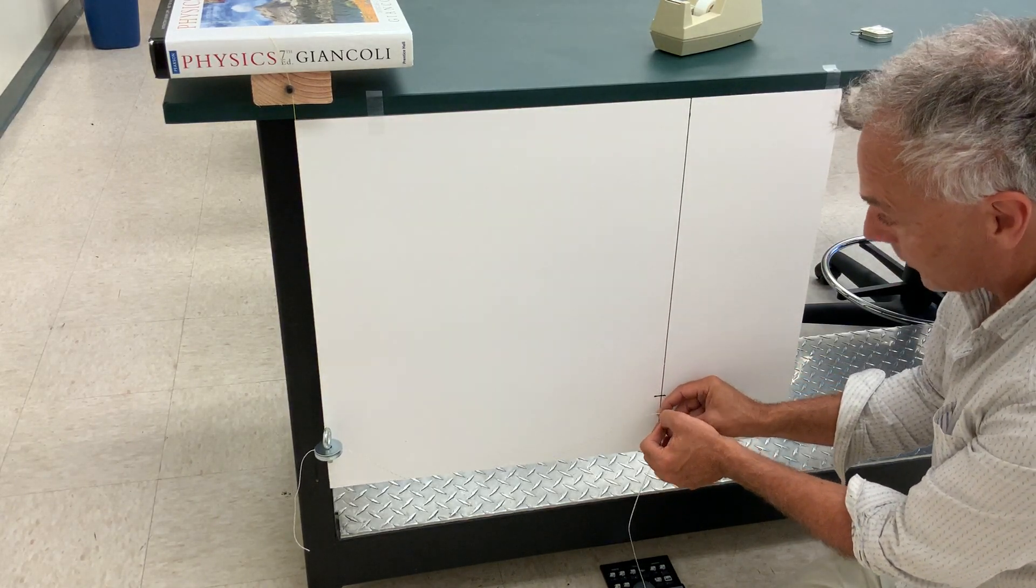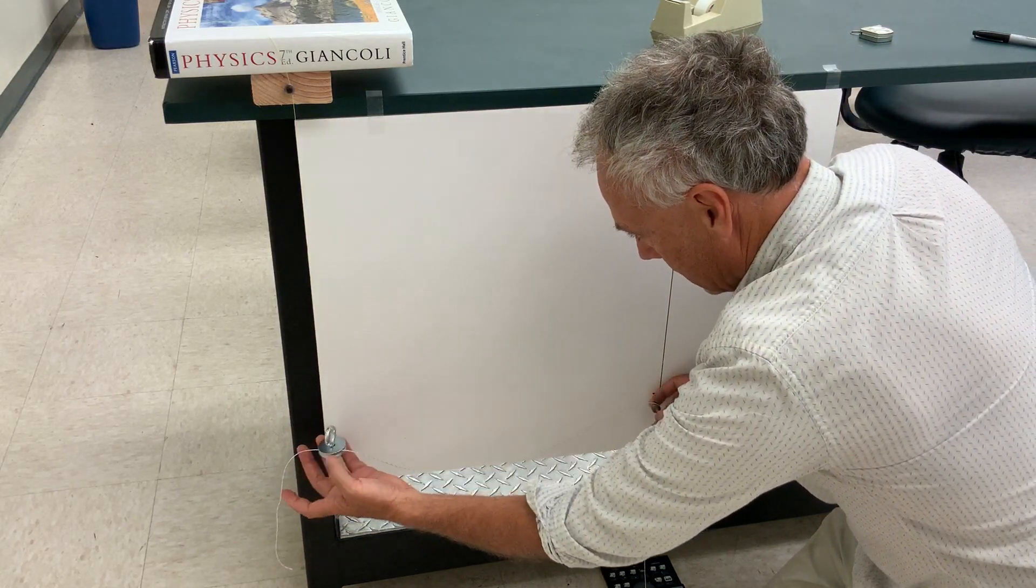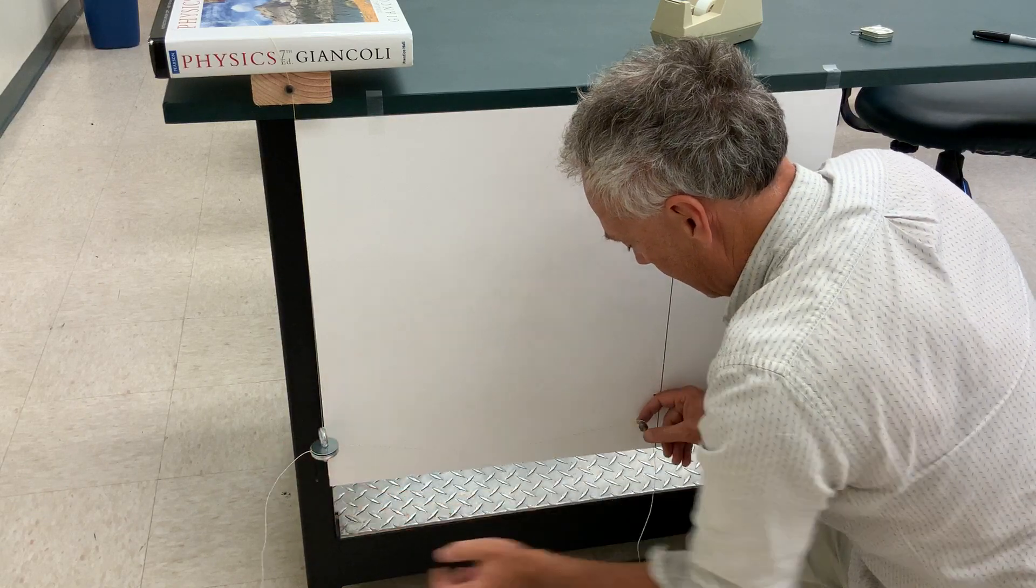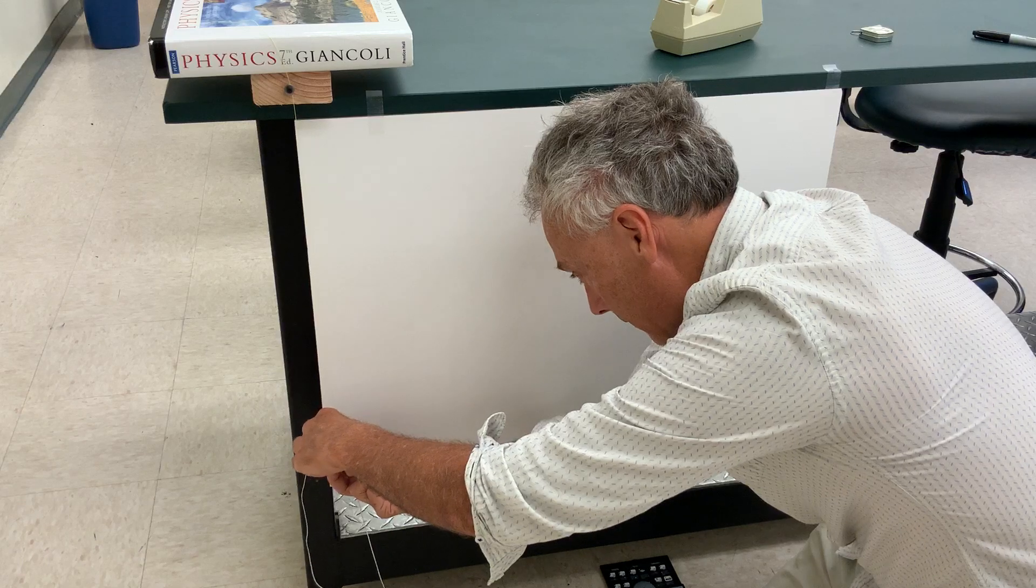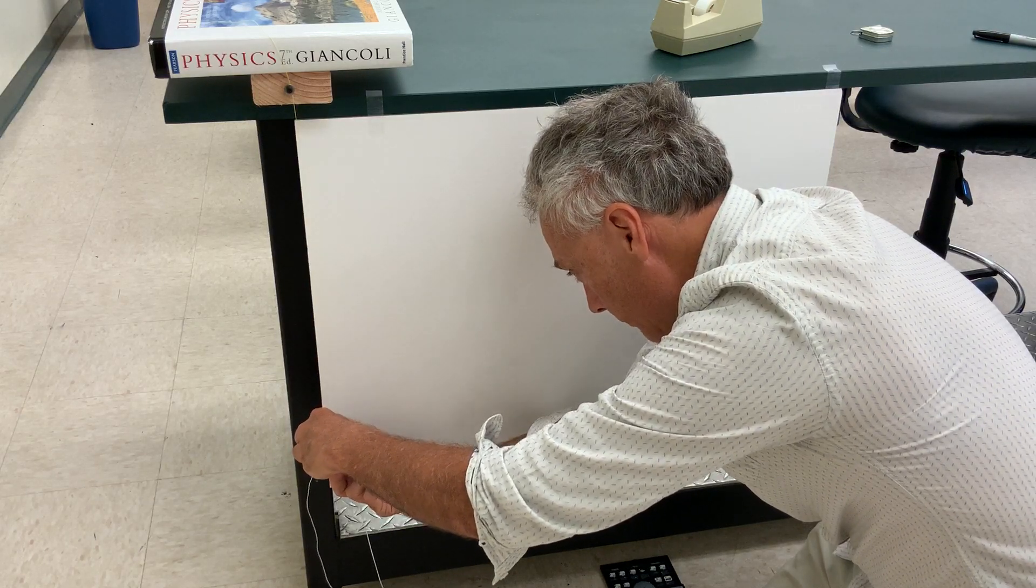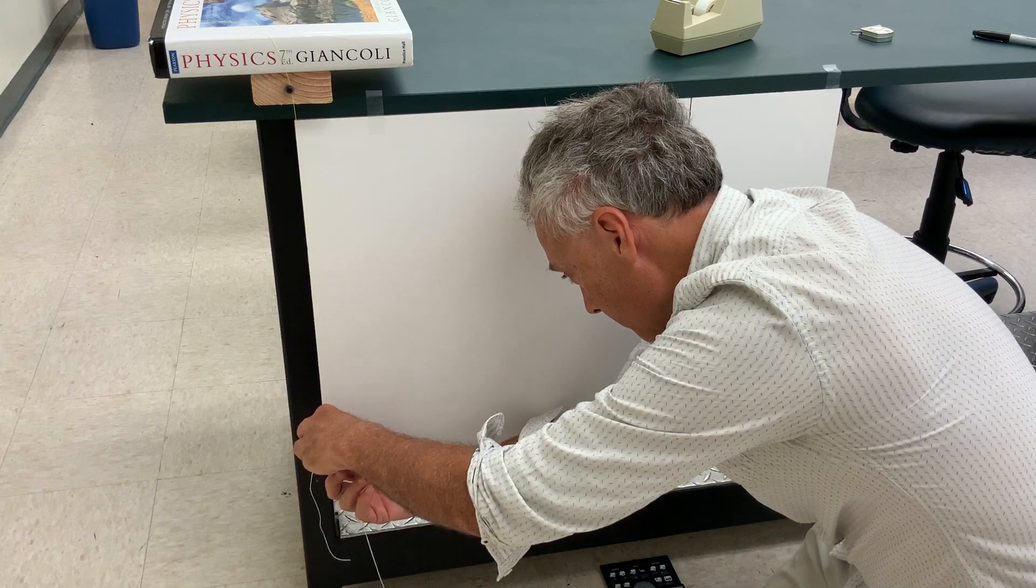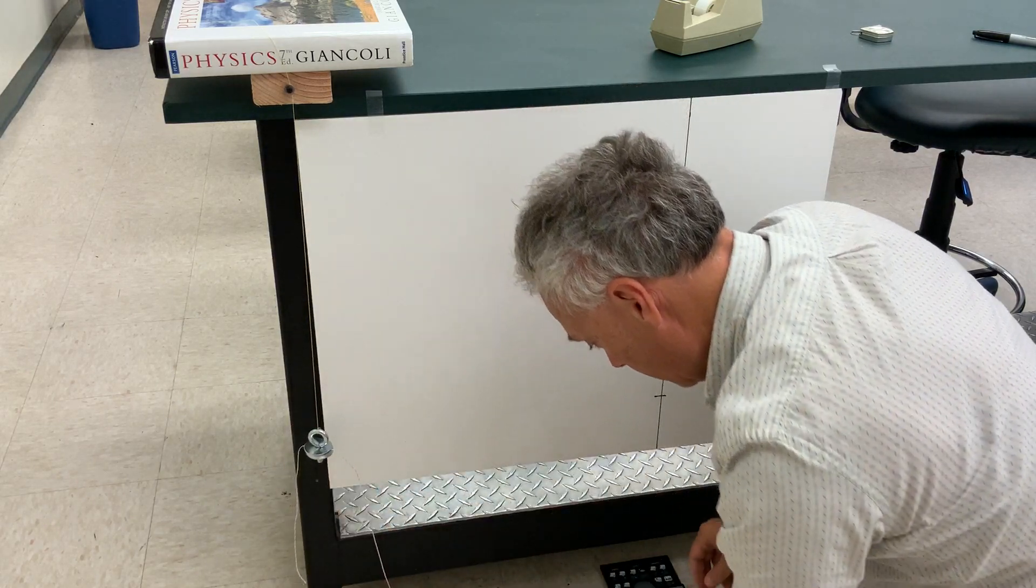So right now it's too loose, so I need to make it a little tighter. If that looks closer, so I'm going to tighten it up a little bit because it's really loose right now. And try again. So this is going to be the most difficult part of the lab, is to get this right.